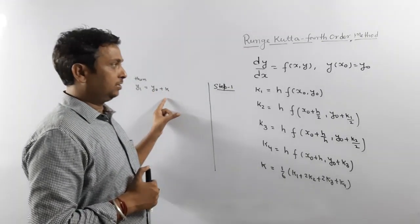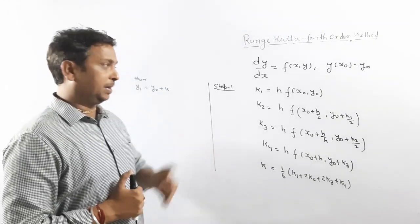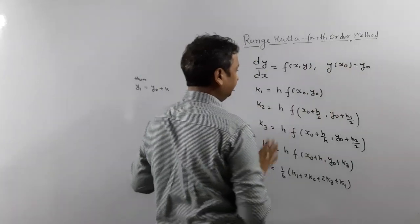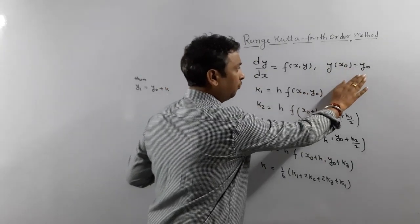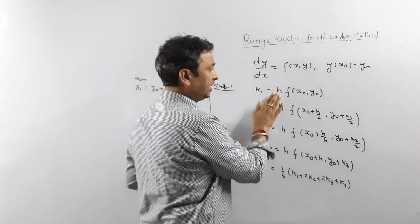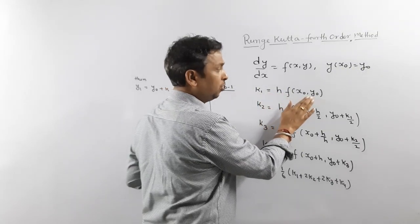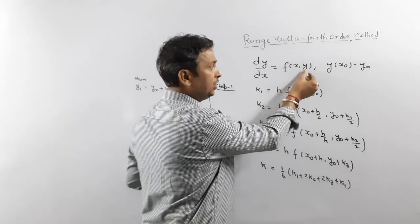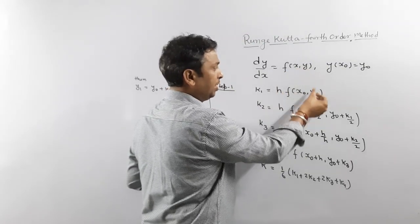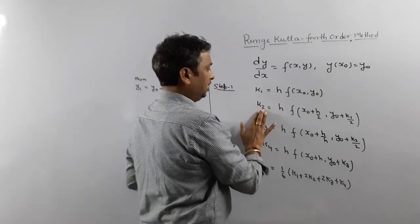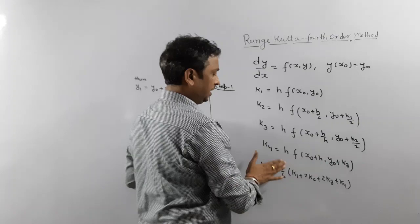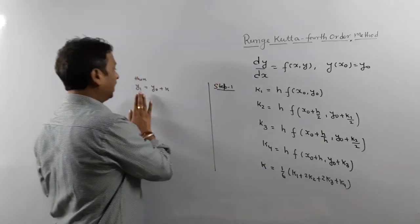If they ask next step, initial condition given, x0, y0 we know. Just calculate K1 value. K1 is h function at x0, y0. f(x,y) already you know. Just in place of x put x0, in place of y put y0. k2 is this, k3 is this, k4. And then calculate K. And then write y1.